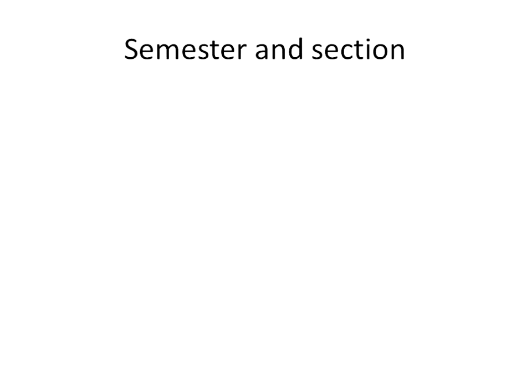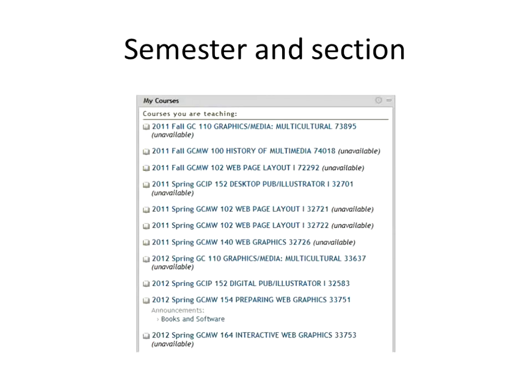Right now we're at the start of the spring 2012 semester, which means the oldest courses on the system are those from spring 2011 — a full year ago. Those won't disappear until the end of this semester, at which time spring 2011 will fall off. So when you bring up your My Courses module, you're going to see a whole lot of entries from past semesters.